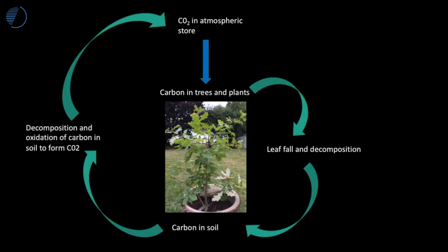To summarise: carbon starts off in the atmosphere and then it's fixed into carbon found in the leaves of plants — this is a tiny little oak tree that I planted a few years ago. Then the leaf falls in autumn, it decomposes and it becomes part of the carbon stored in the soil. Gradually over time, that may be oxidised, or due to the presence of microbes in the soil, may oxidise to form carbon dioxide back in the atmosphere. So carbon is cycled between the atmosphere, the vegetation store, and then the soil store, with continuous cycling occurring.